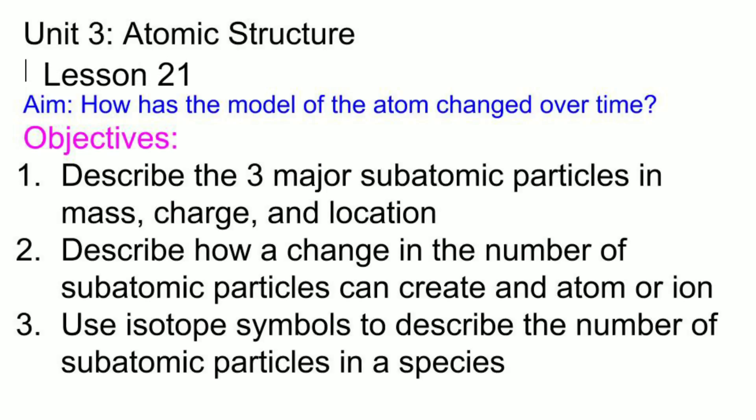Hi class, welcome to the first lesson in Unit 3, Atomic Structure. Today we'll begin our exploration of how the structure of an atom has changed over time. As we begin, we will review the three major subatomic particles, how a change in a subatomic particle can create an atom or an ion, and how a change in subatomic particles can create isotopes. We'll begin by exploring the early models of the atom. The next two lessons we'll continue on and we'll explore the later models of the atom. Let's go.